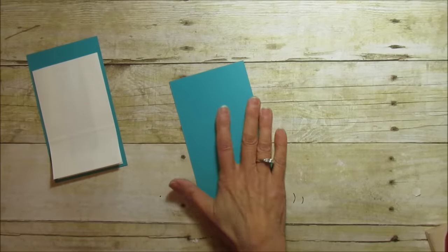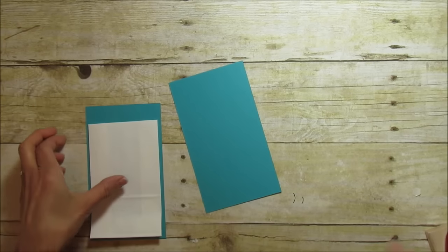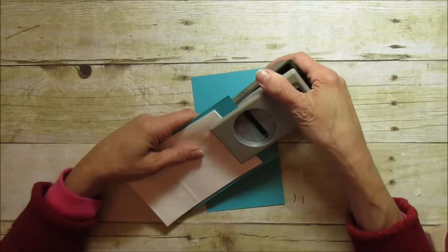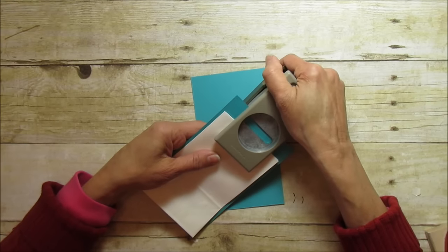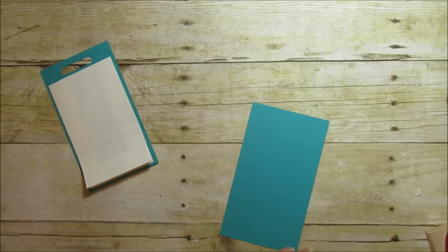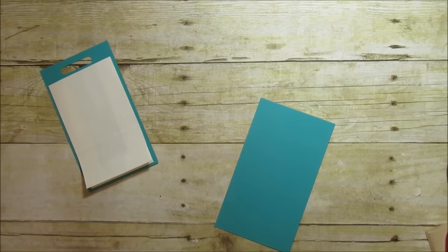And then we're going to decorate the front half before we attach it here and then you're going to need the word window punch. Let me go ahead and just punch that out here and I'm just centering it.